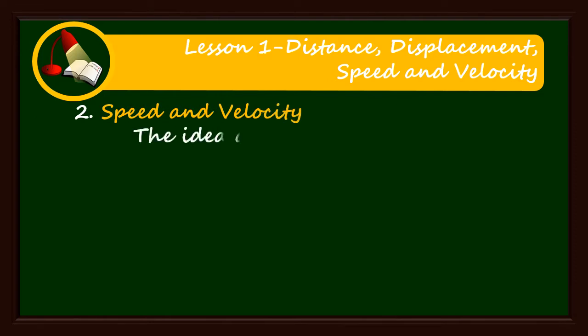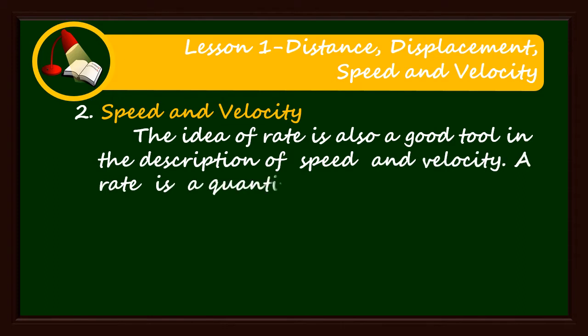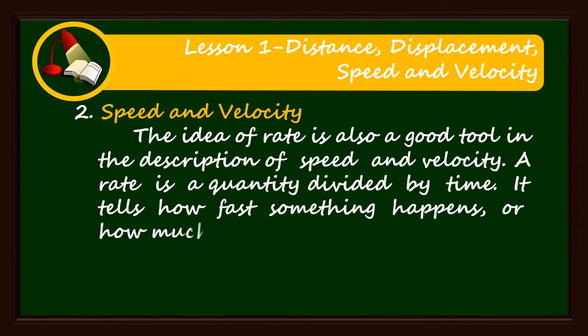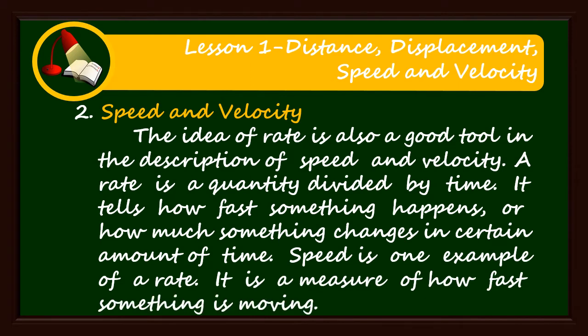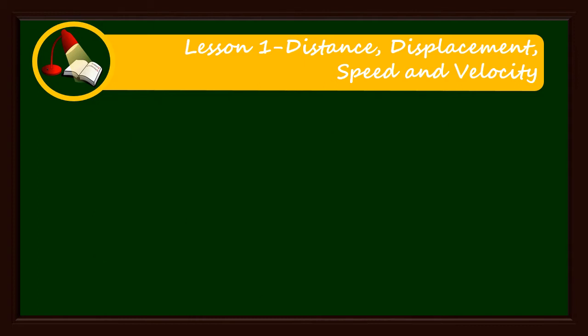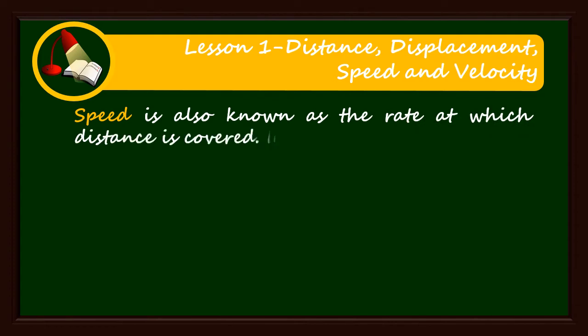The idea of rate is also a good tool in the description of speed and velocity. A rate is a quantity divided by time. It tells how fast something happens or how much something changes in a certain amount of time. Speed is one example of a rate. It is a measure of how fast something is moving. Speed is also known as the rate at which distance is covered.